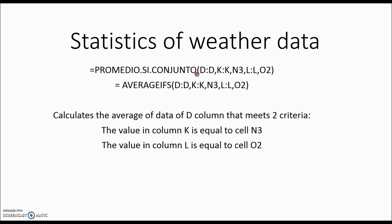The first thing is the range where we are going to calculate the average. In this case, the instruction tells us that the average of column D will be calculated for all data meeting two criteria. The first criterion indicates that the value in column K should equal the value of cell N3. The second criterion tells us that the value in column L should equal the contents of cell O2.